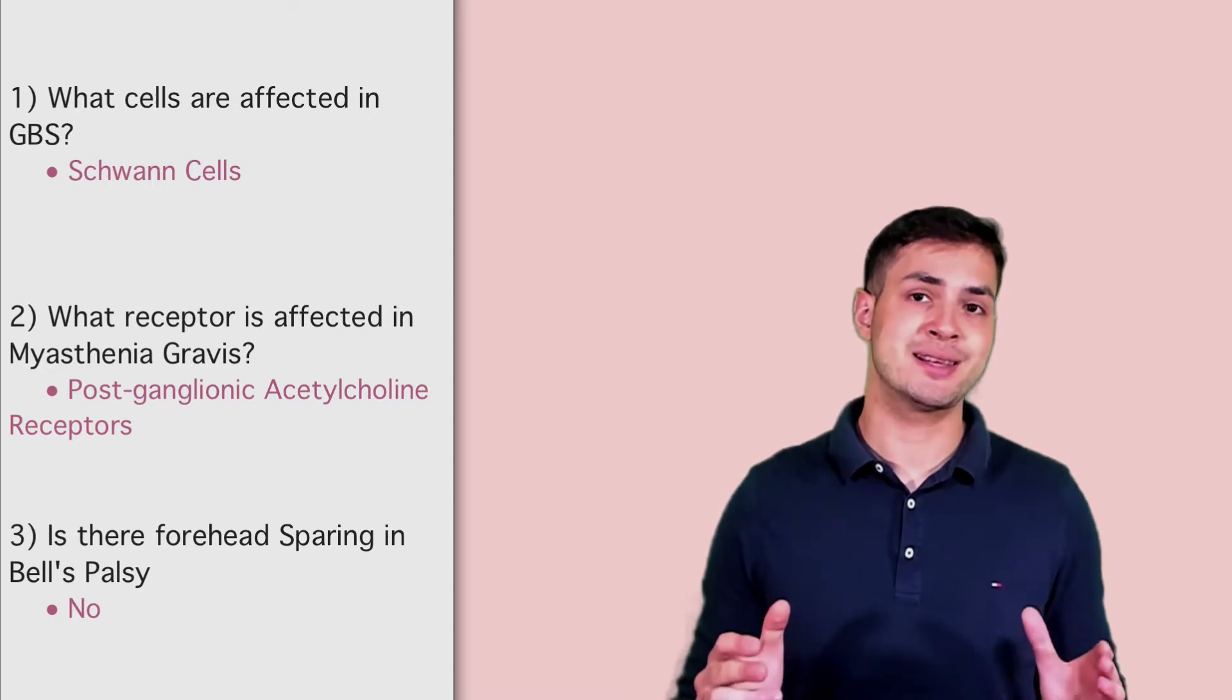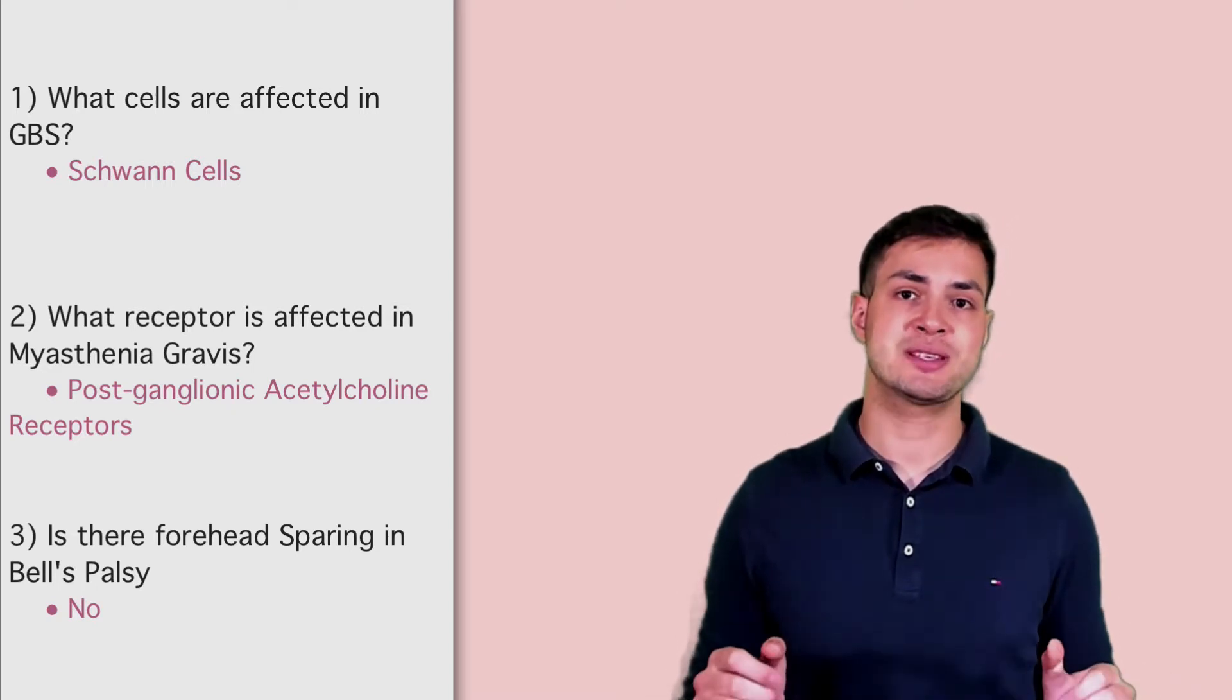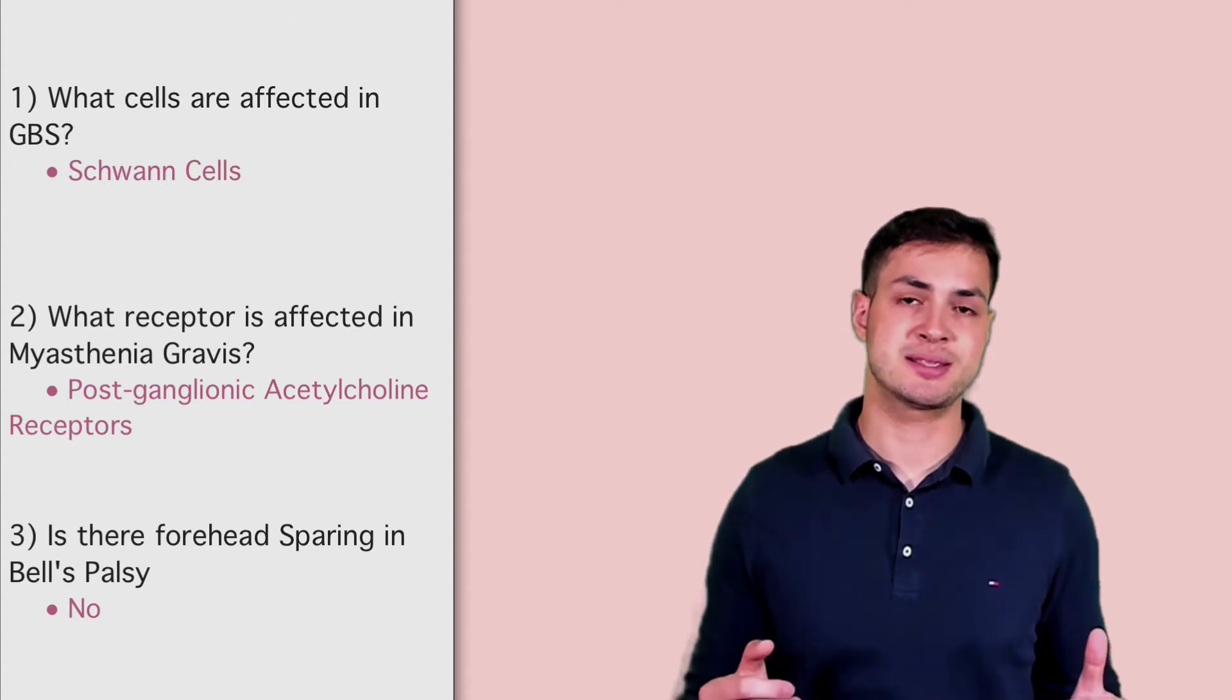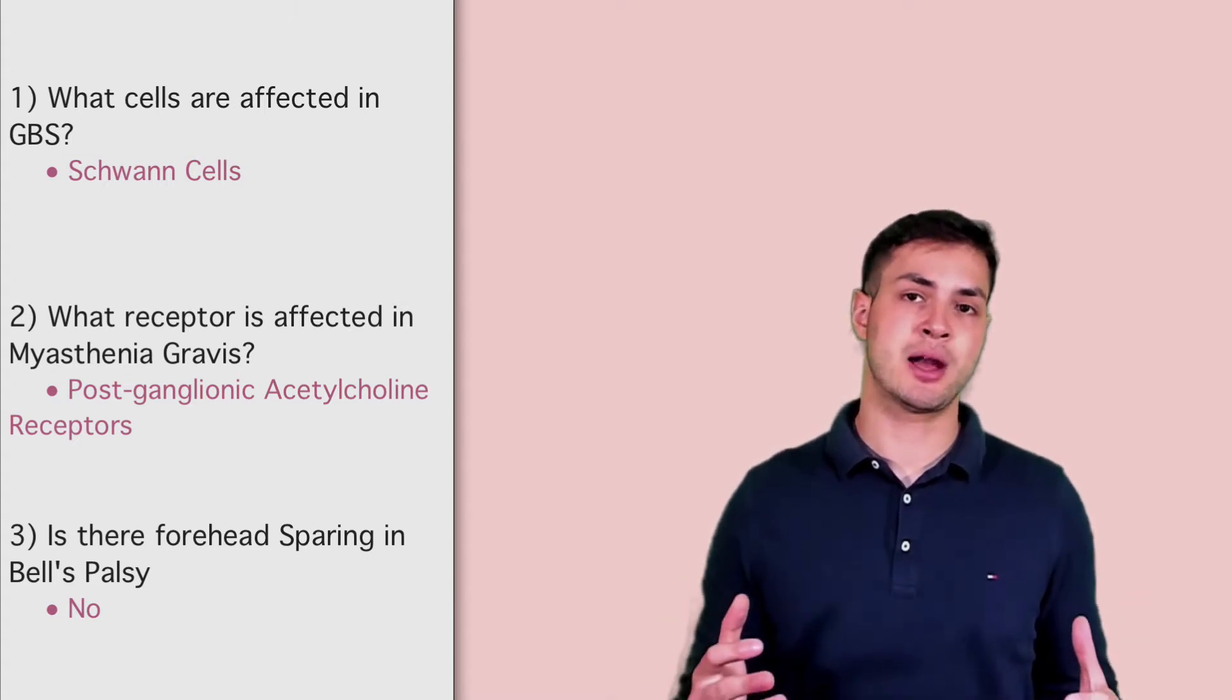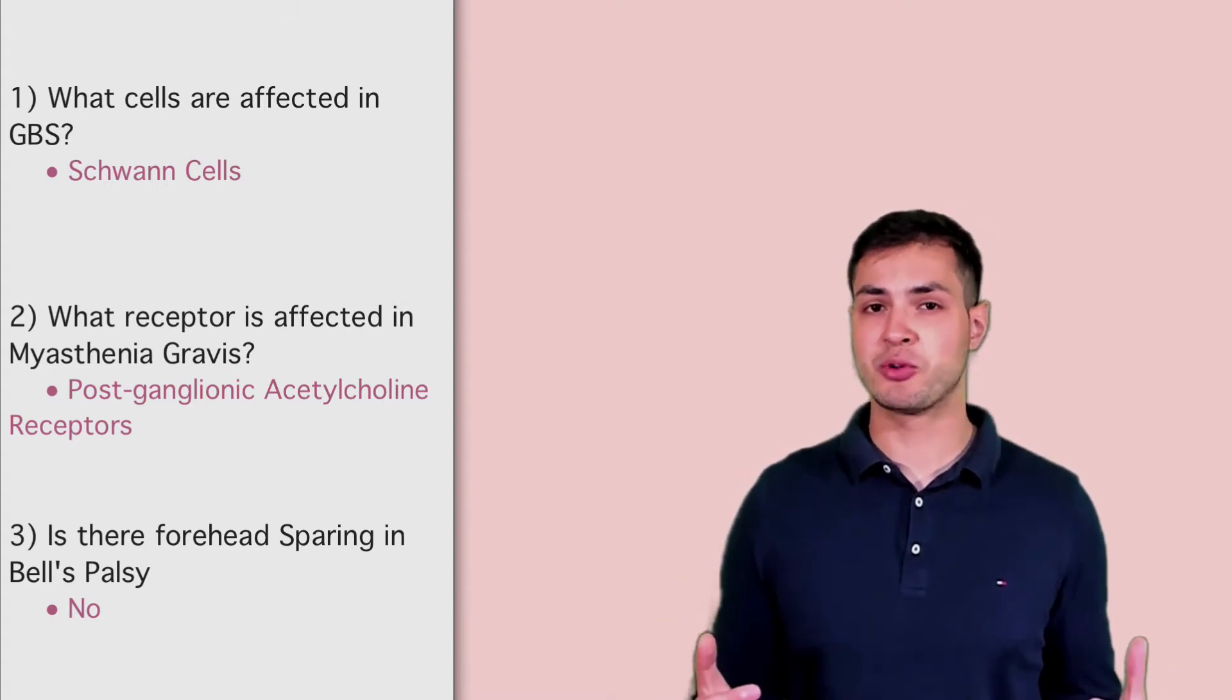And number three, is the forehead spared? Well, the answer is the forehead is not spared in Bell's palsy. And the reason for that is it's a lower motor neuron disease. Forehead sparing occurs in upper motor neuron regions such as a stroke because of bilateral connections to the forehead.